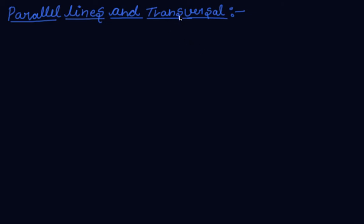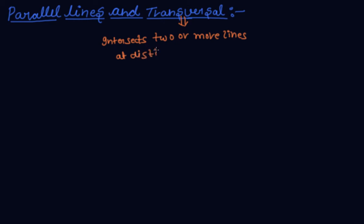A line which intersects two or more lines at distinct points is called a transversal line.